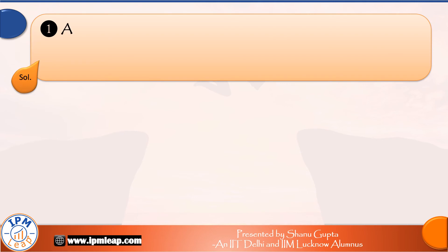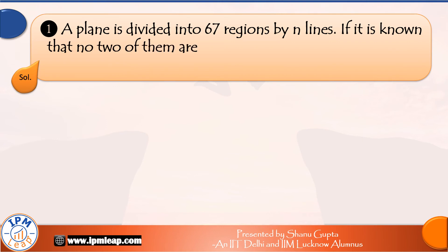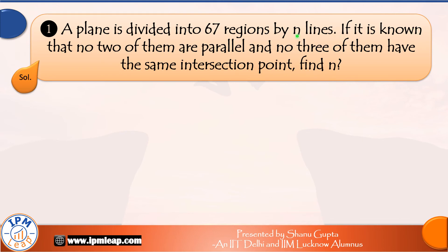Finally, let's practice a quick question on this concept. All you need to know is the formula we just discussed. A plane is divided into 67 regions by n lines. If it is known that no two of them are parallel and no three of them have the same intersection point, find n.